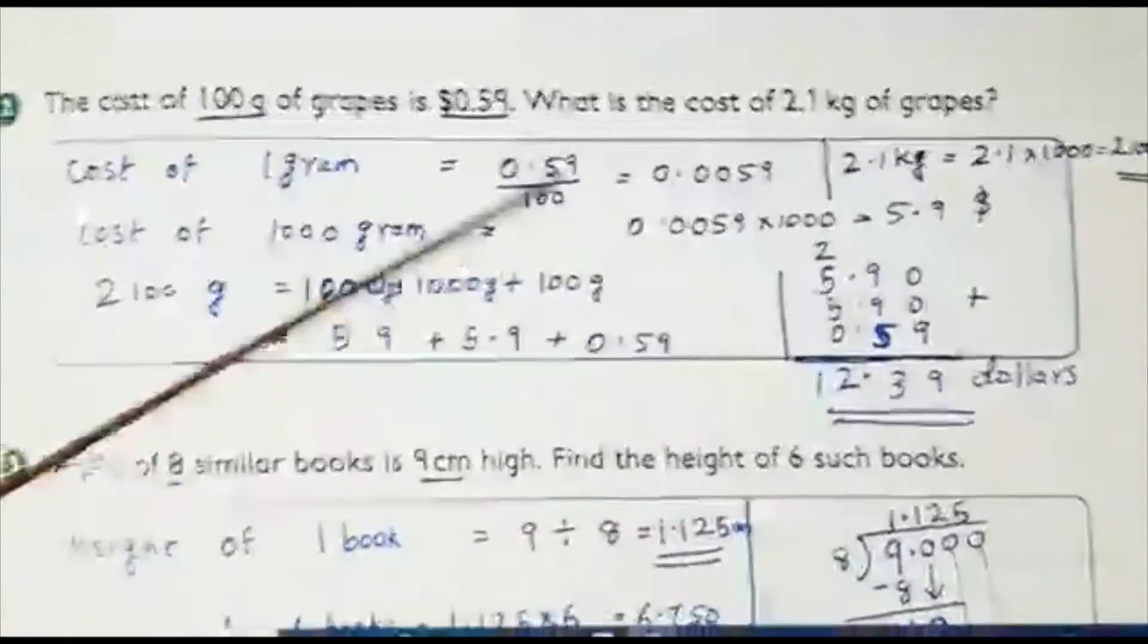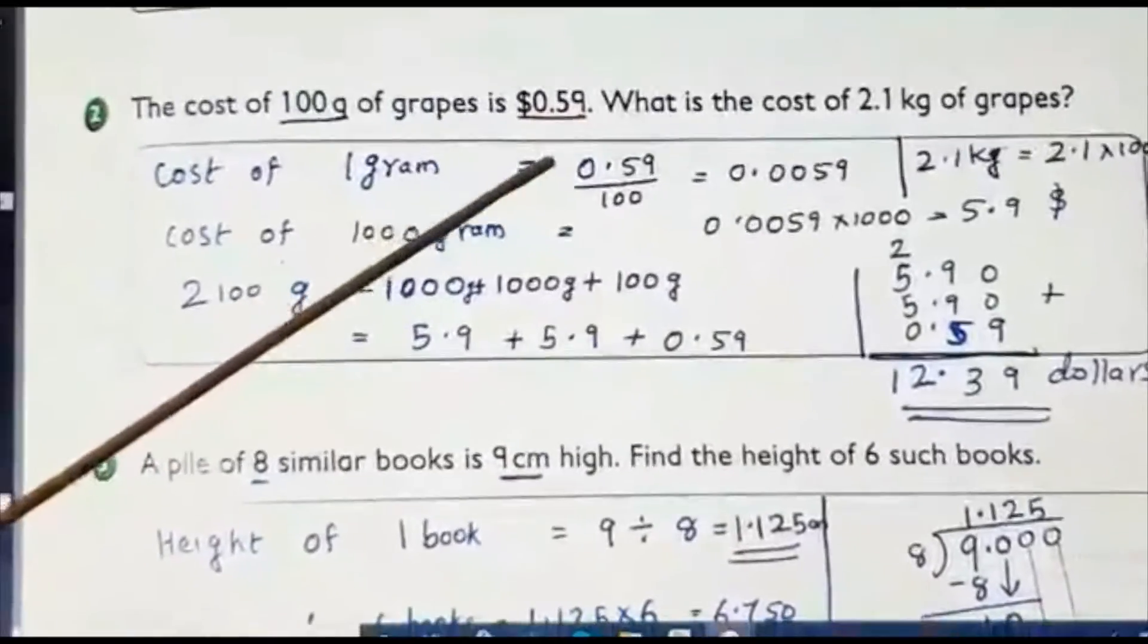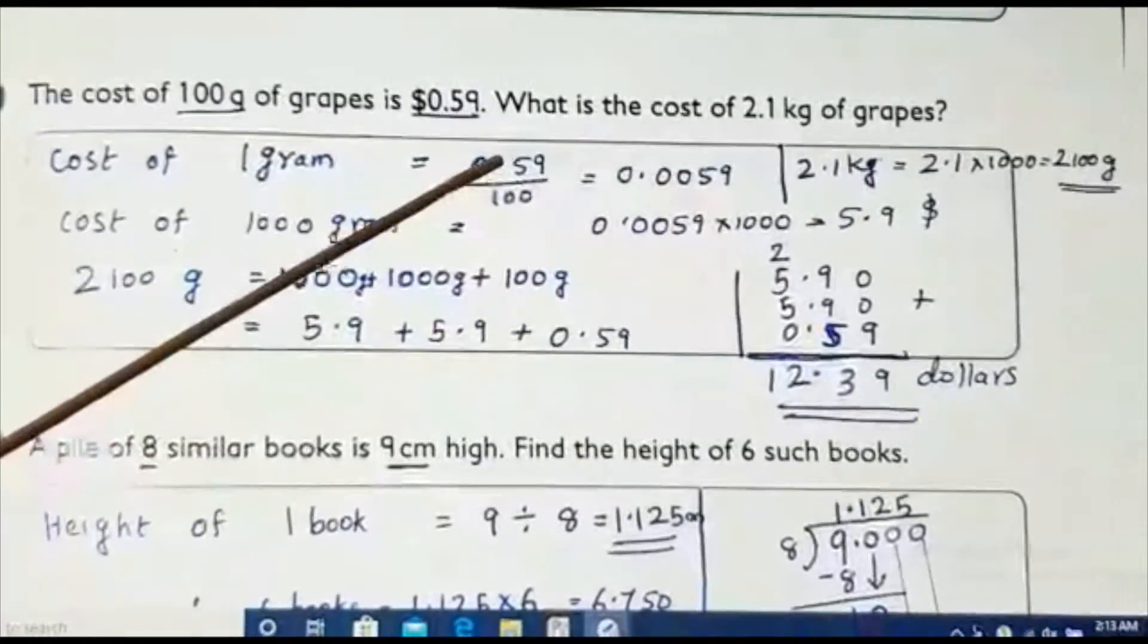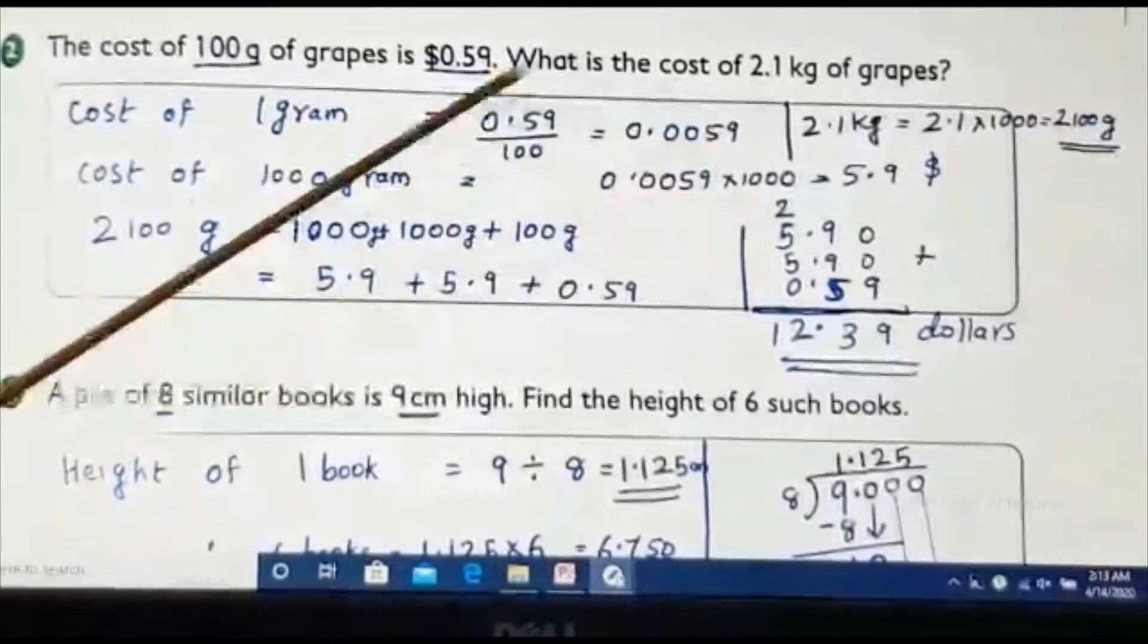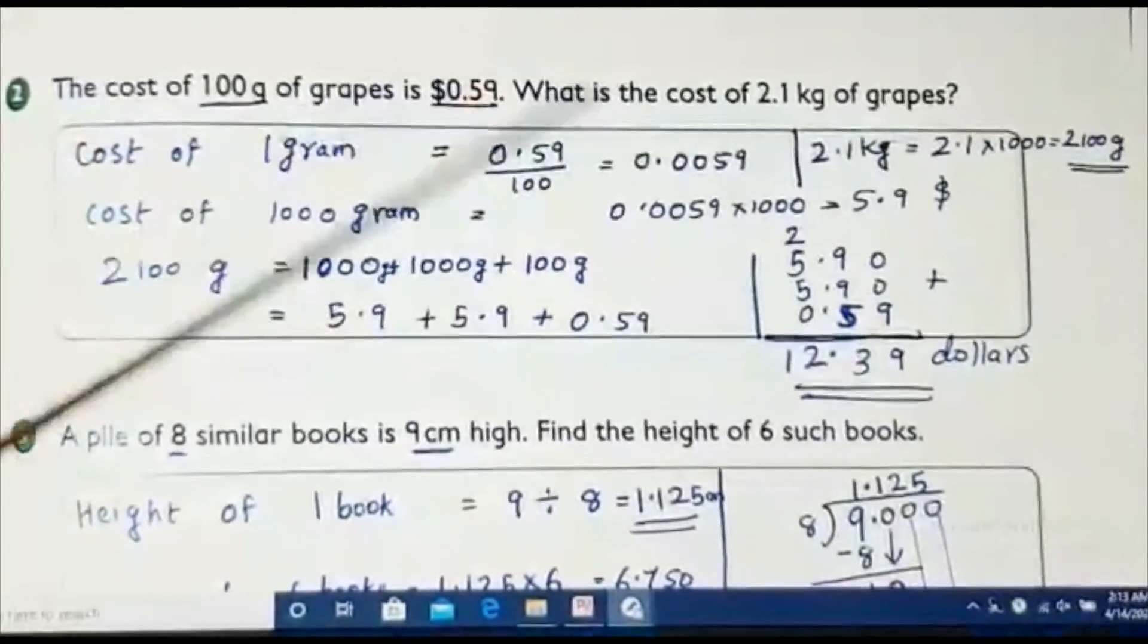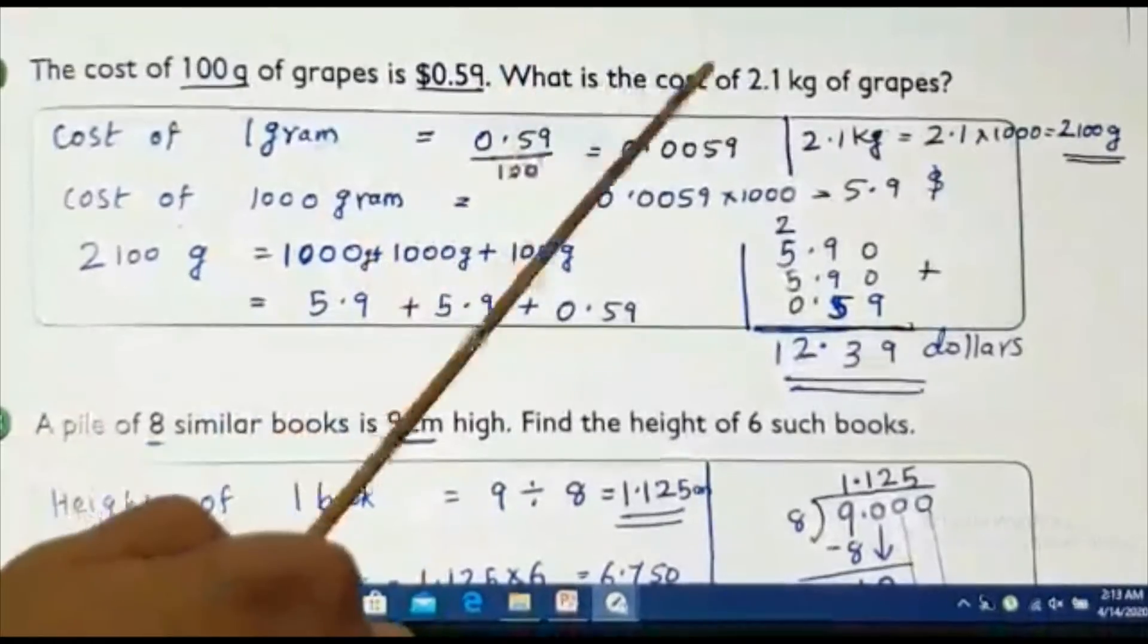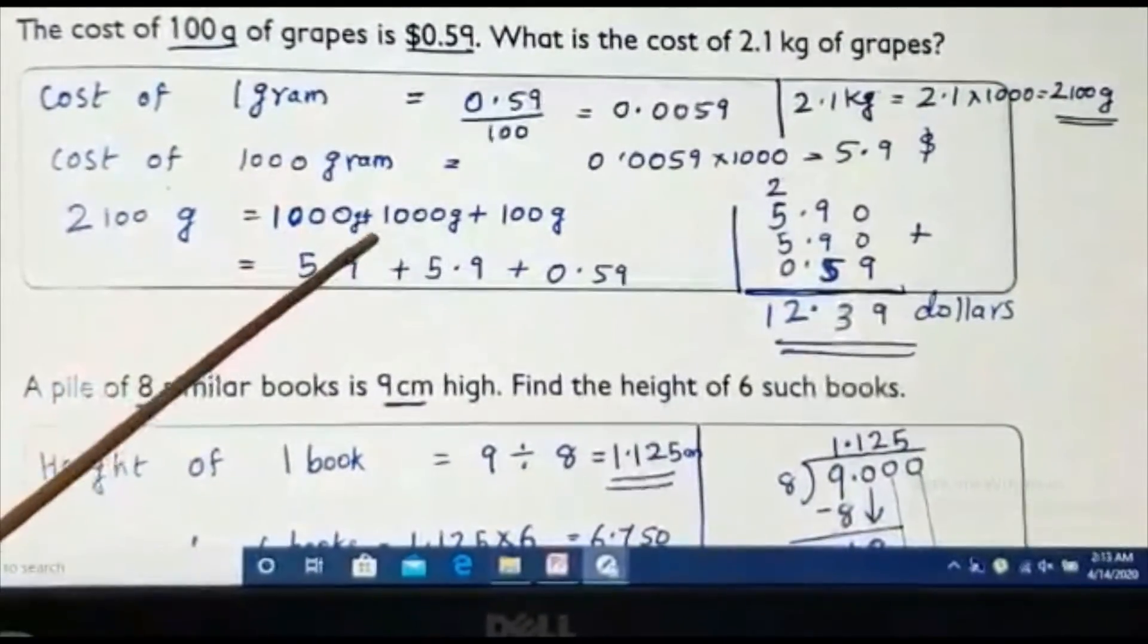1 gram is 0.59 divided by 100. We know 2 zeros are there. When we do 2 points, I am doing division. 2 points, I will move towards left. What is answer? 0.0059 because from here it is moving 1, 2. 0.0059 is the cost of 1 gram. Then we know 2.1 kg grapes we are going to find. 1 kilogram means how many grams? It is 1000 grams. I am finding here cost of 1000 grams. What is the cost of 1000 grams? That is 0.0059 multiply 1000.